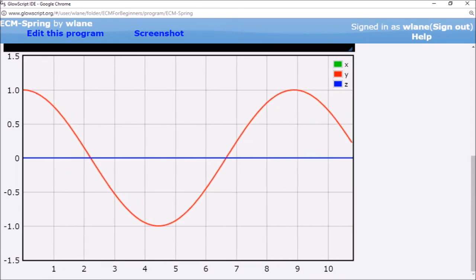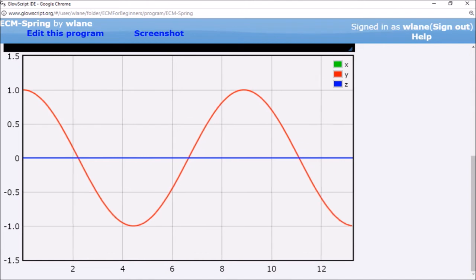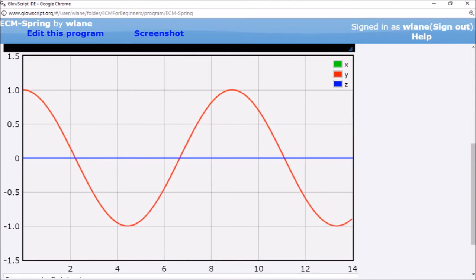Notice that the amplitude of the cosine curve is exactly the same as the initial amount we stretched the spring by. But what determines the period of the curve?